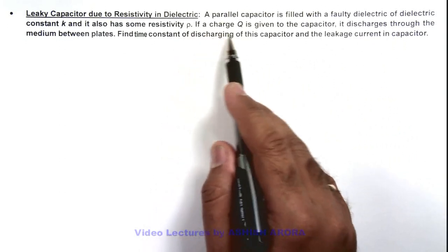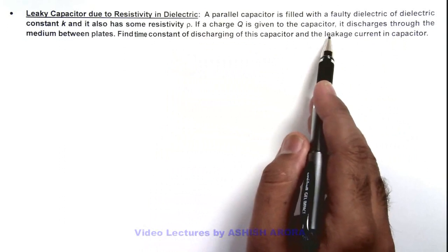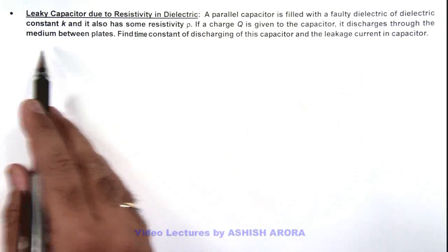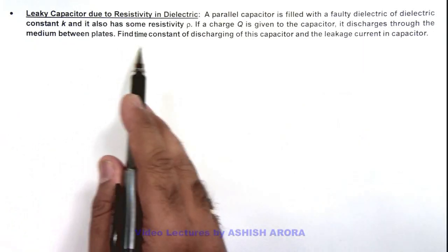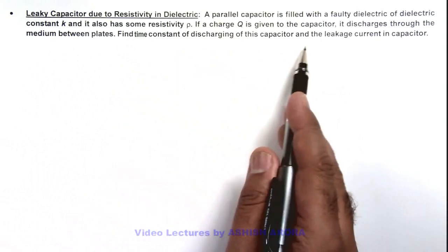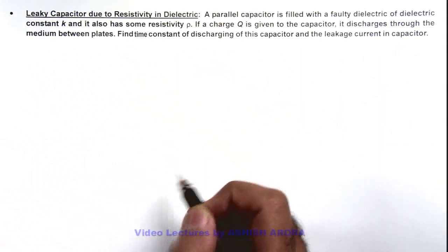And if a charge Q is given to the capacitor, it discharges through the medium between the plates and we are required to find the time constant of discharging of this capacitor and the leakage current in the capacitor.